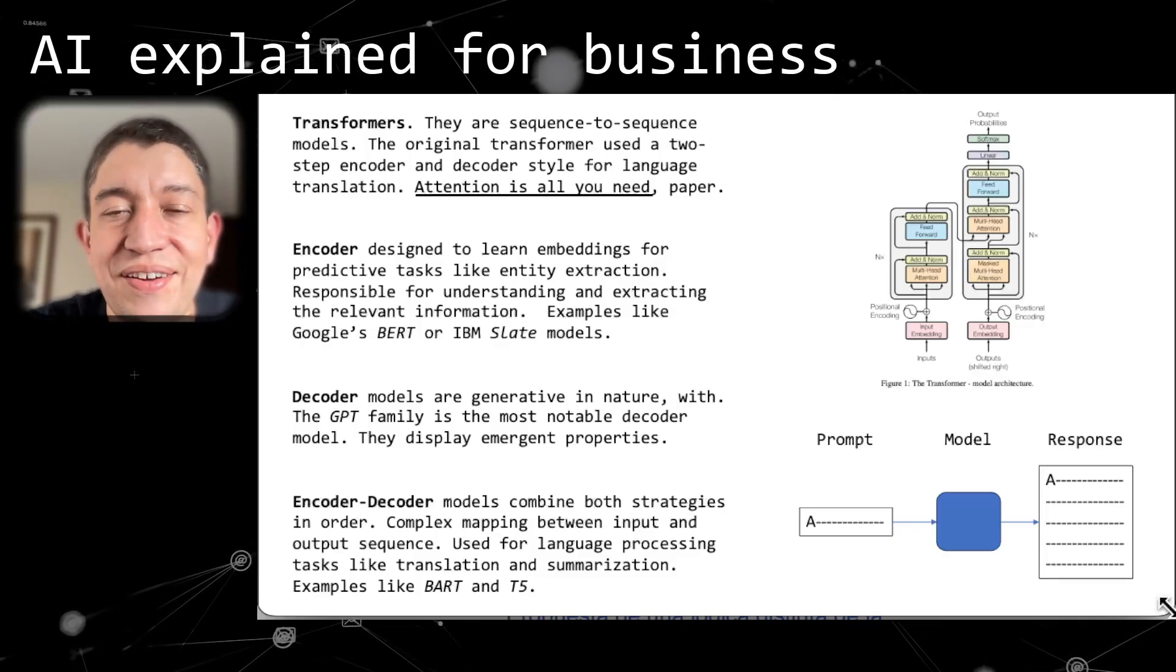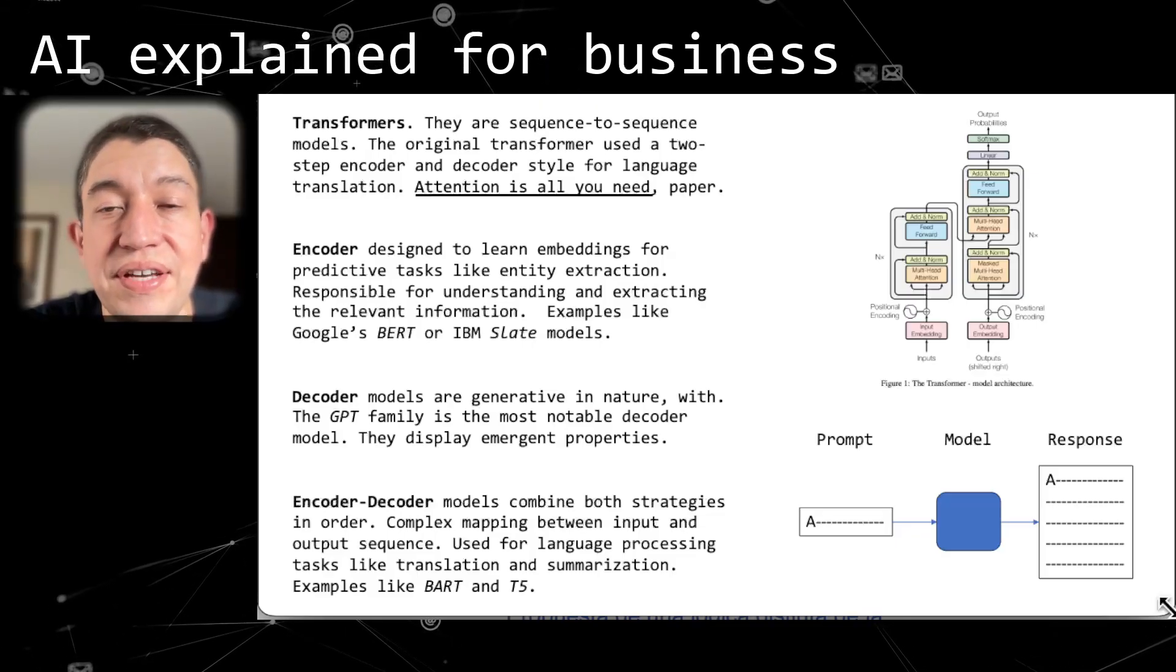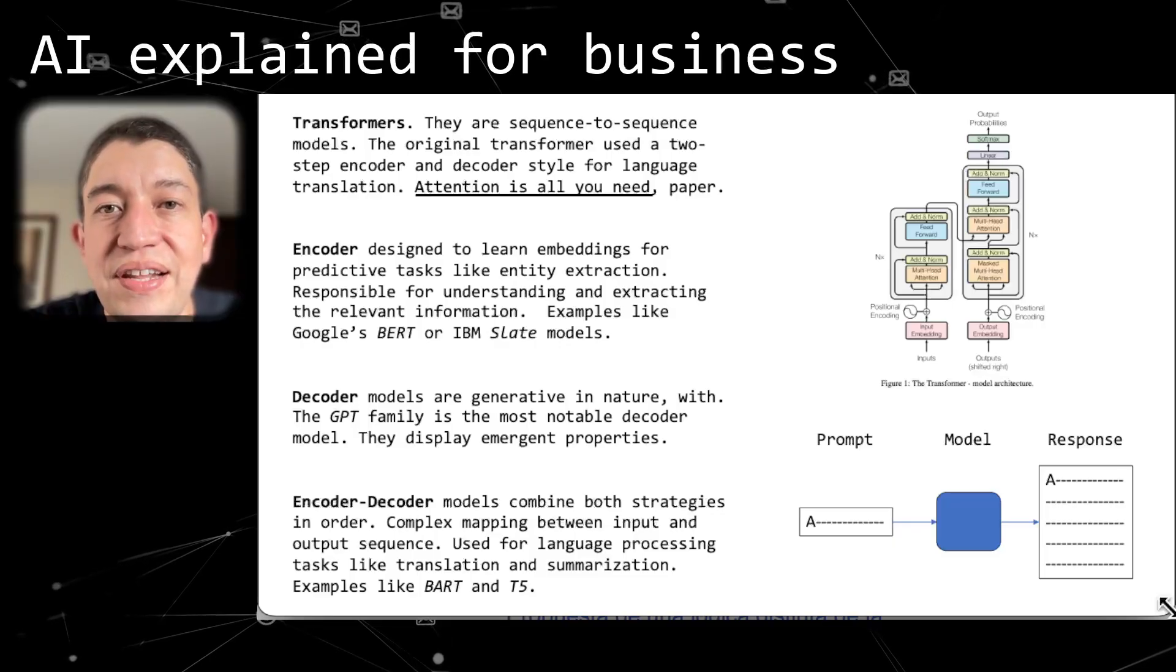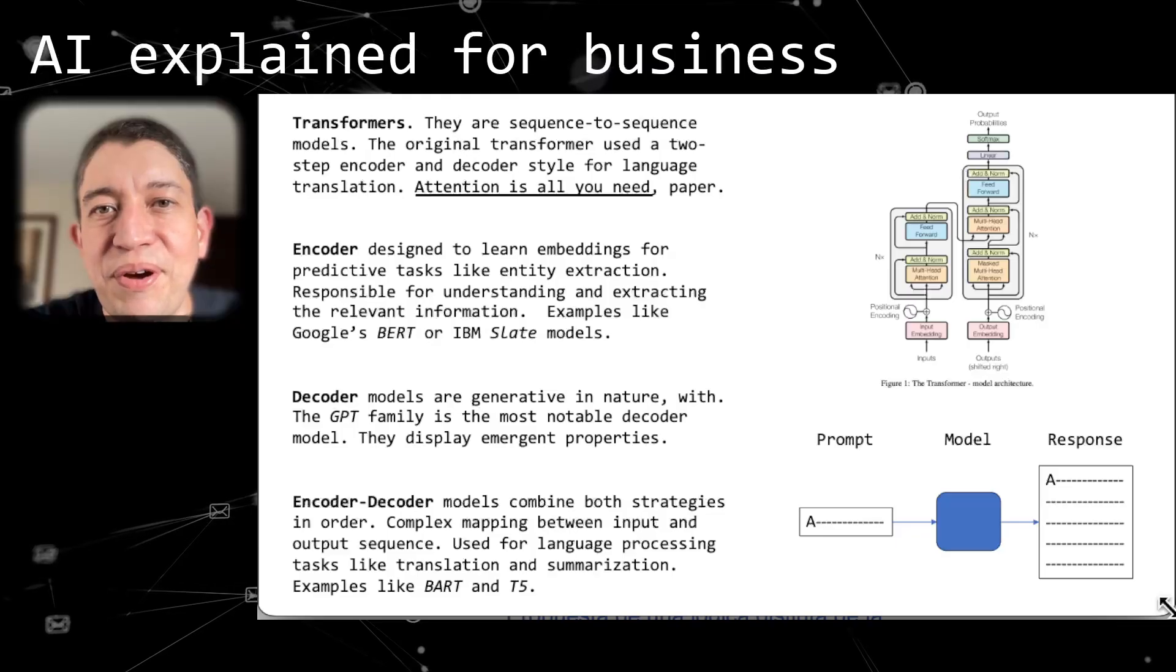Some great examples of encoder-decoder models are BART and T5. It's definitely something I would encourage you to take a look at and learn more about.